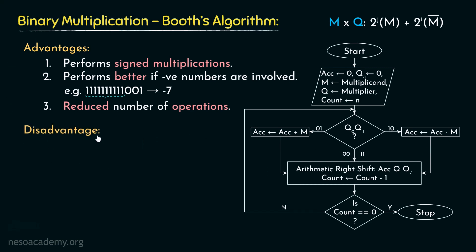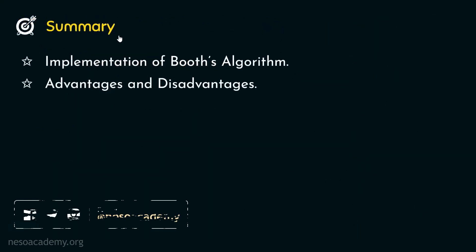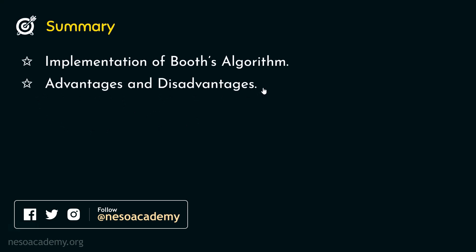Now coming to the disadvantage — it only has one. The performance decreases if Q is a sequence of alternating ones and zeros, like 1, 0, 1, 0. This is going to be a little bit tricky to deal with in case of Booth's algorithm. And that's the only disadvantage.